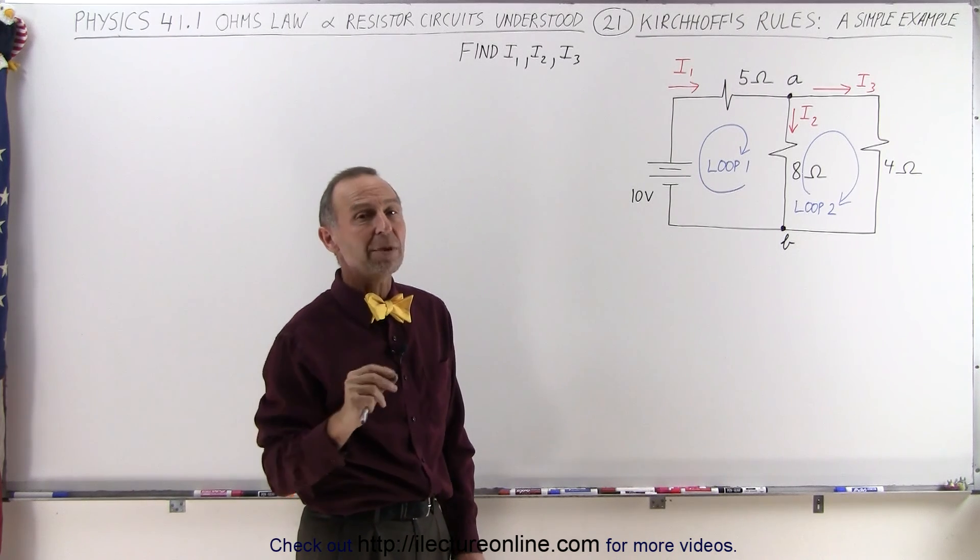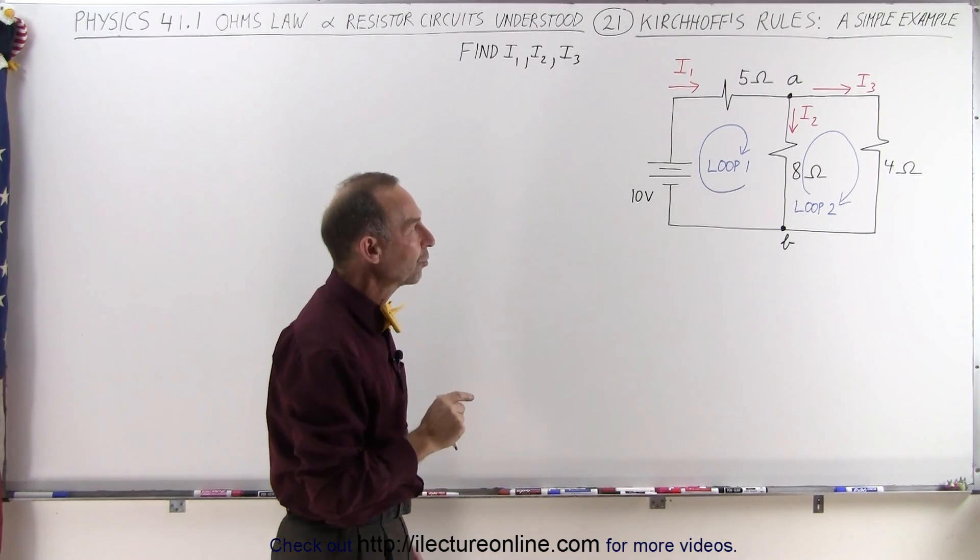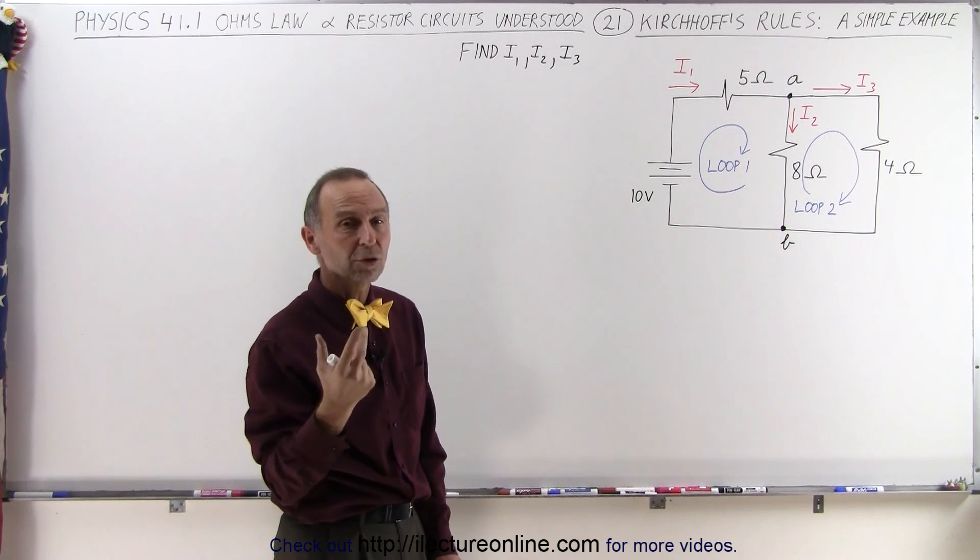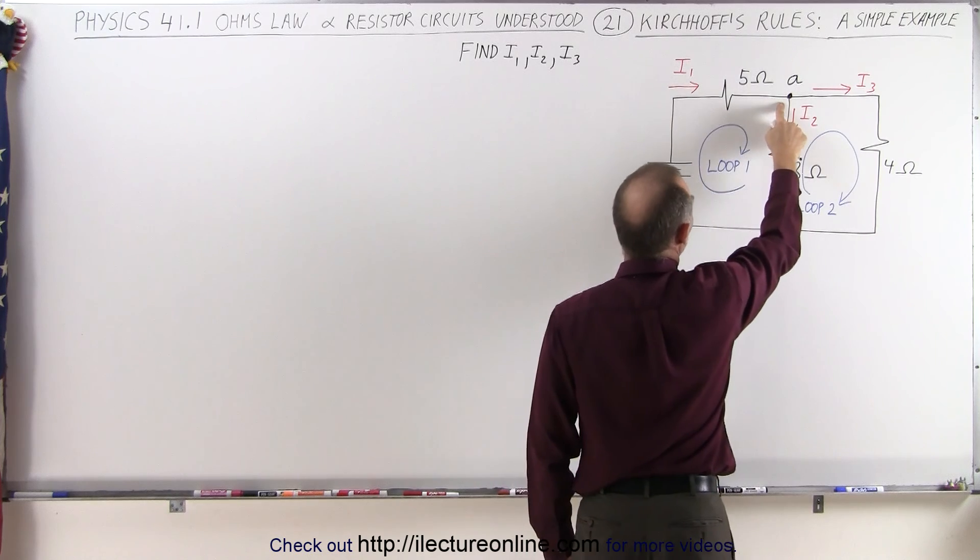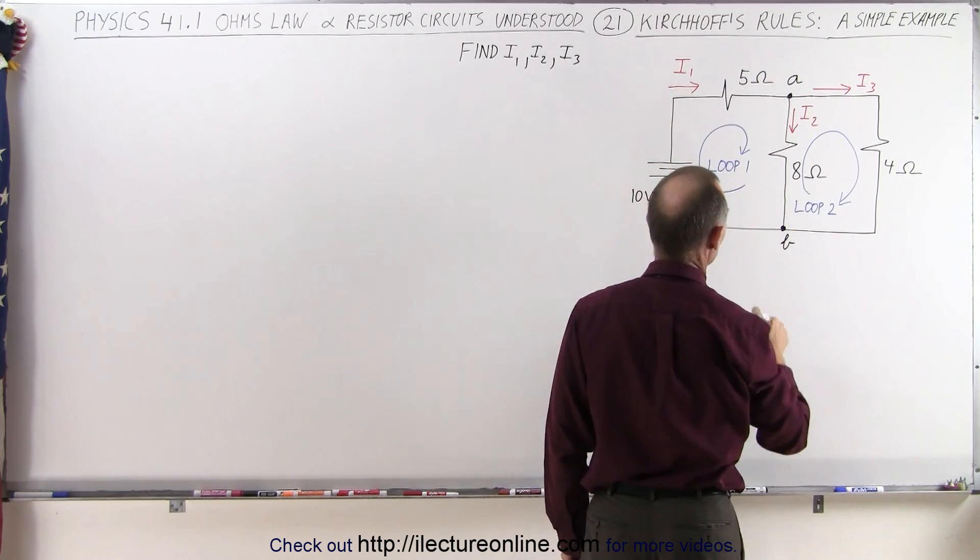If we have three unknowns, that means we're going to need three equations. We can find that by using the two rules. The first rule, we're going to sum up all the currents entering a branch point and all the currents leaving a branch point.